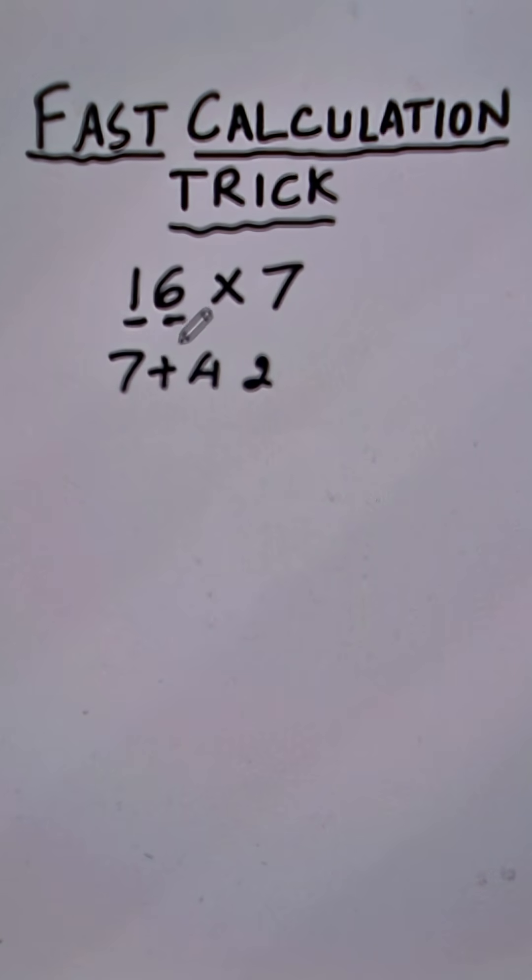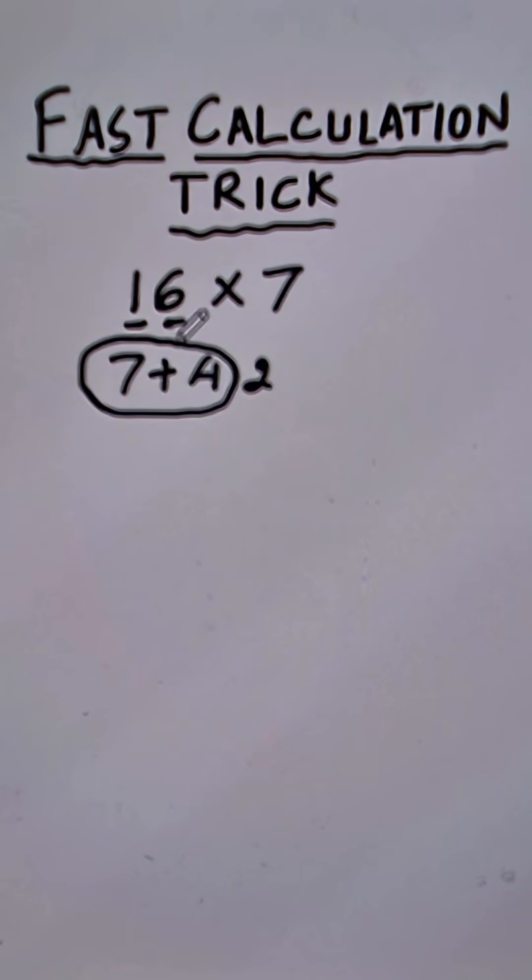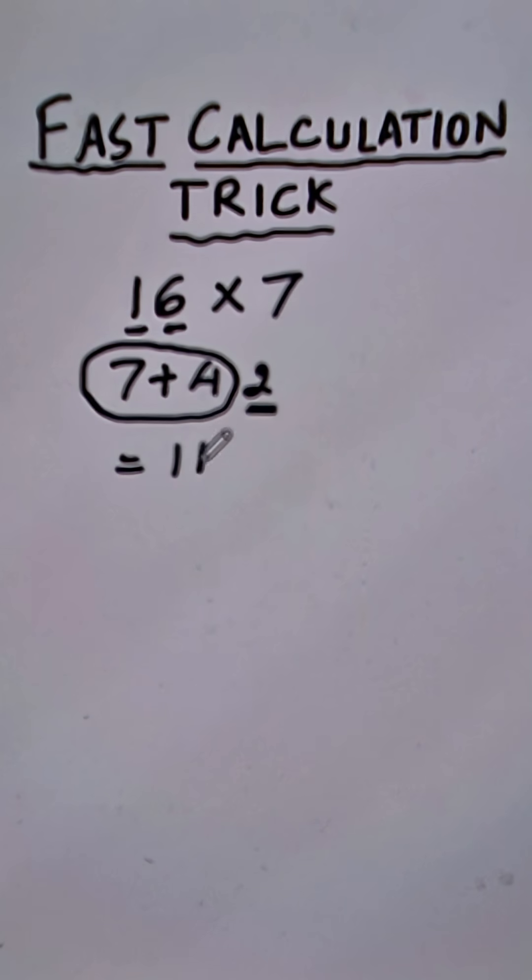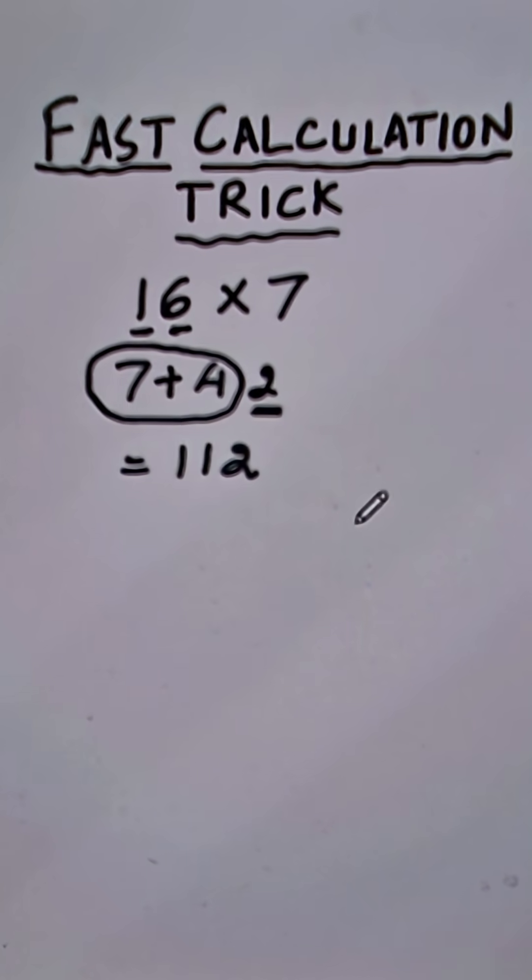All you need to do is to put a plus sign here and then add these digits and the last digit will be retained as it is. So 7 plus 4 is 11 and a 2. So 112 is the answer.